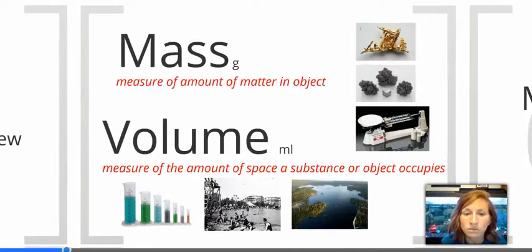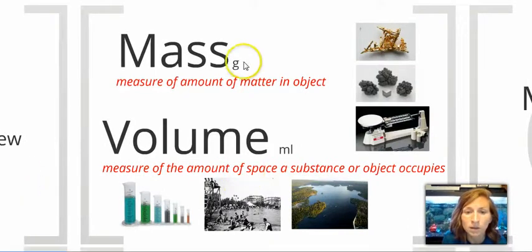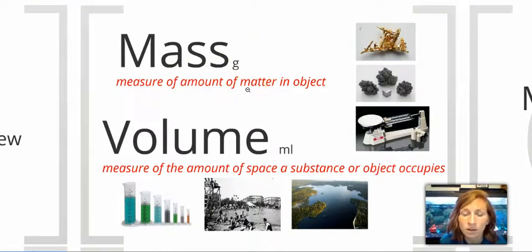As a reminder, mass is generally measured in grams, designated by the abbreviation G, and it is the amount of matter that is in an object. It's different from weight because we're not including the force of gravity.